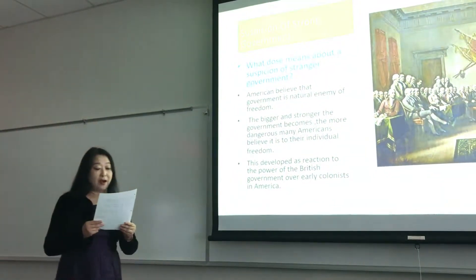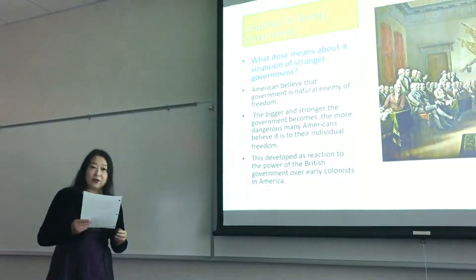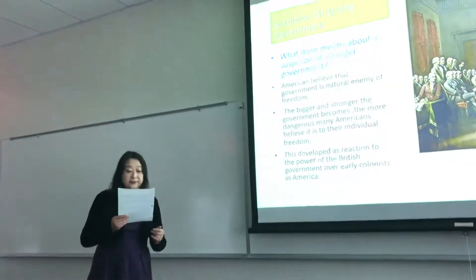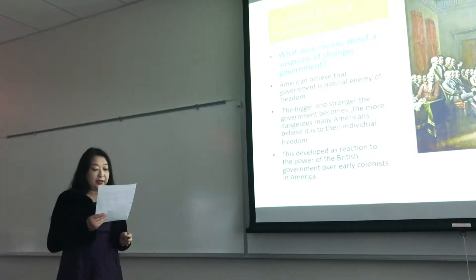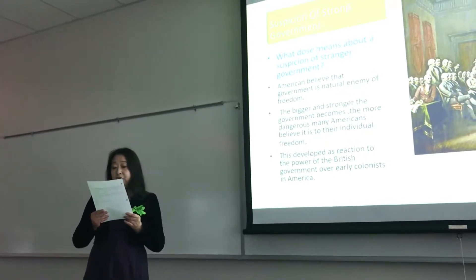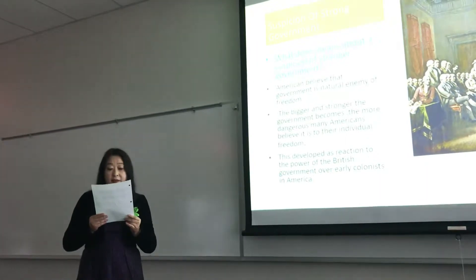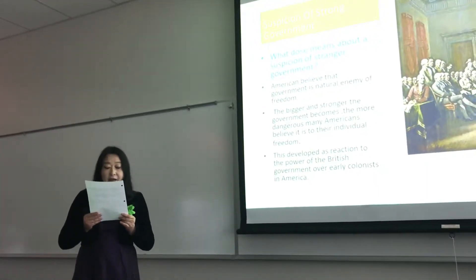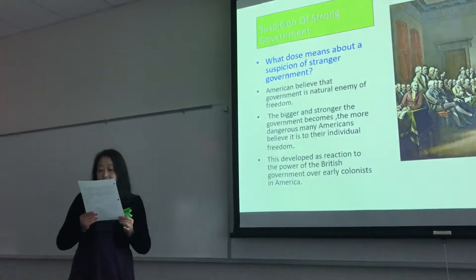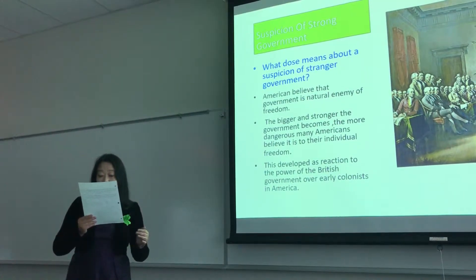The suspicion of strong government goes back to the men who led the American Revolution in 1776. These men believed the government of Great Britain wanted to discourage the freedom and economic opportunity of American colonists by excessive taxes and other measures that would benefit the British aristocracy and monarchy.